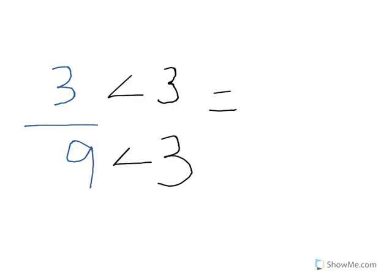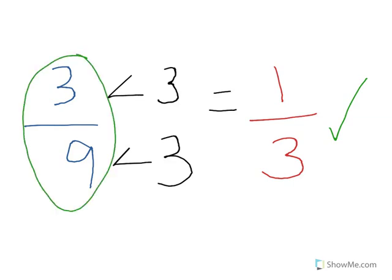And I will say 3 divided by 3 is 1. 9 divided by 3 is 3. And that's a simplified one. That makes 1 over 3 is equal to 3 over 9. The important part is that whatever you divide the number by to simplify should be the same for both numbers. That's very important.